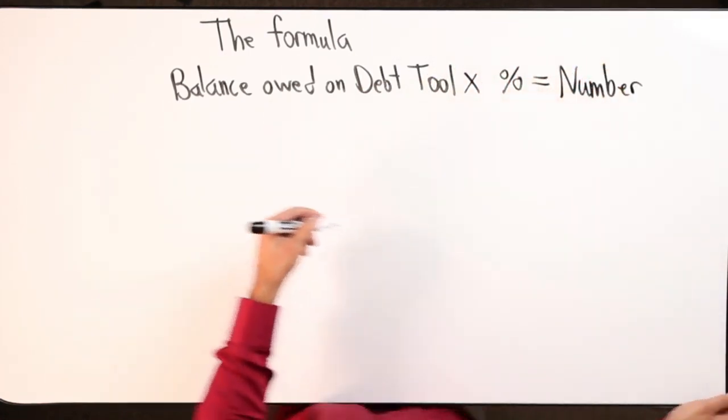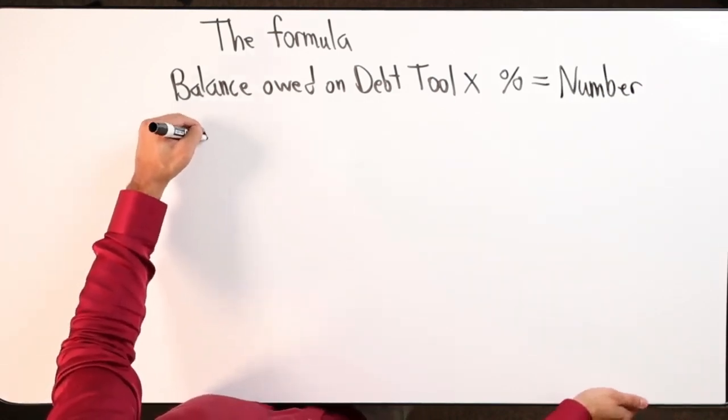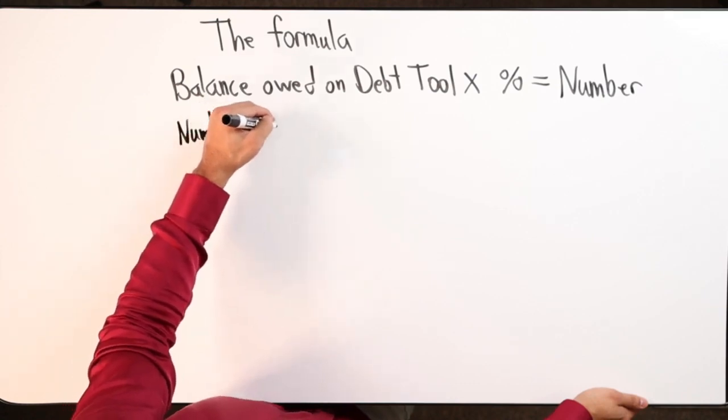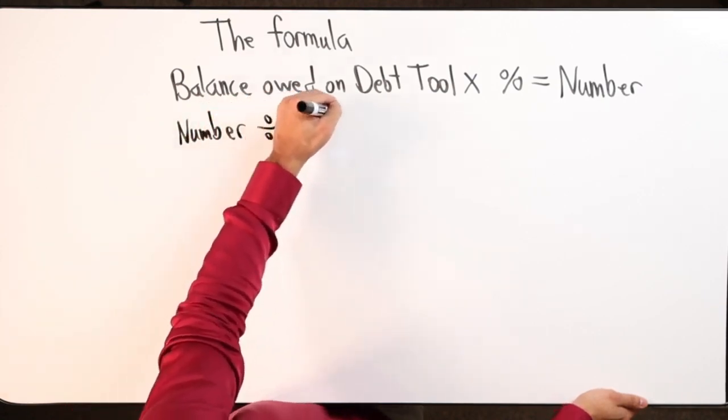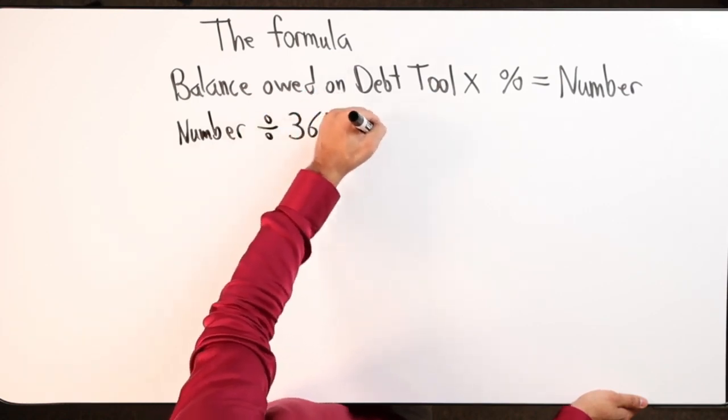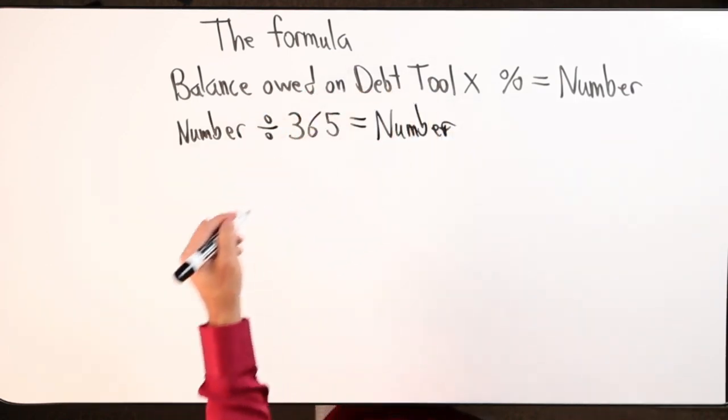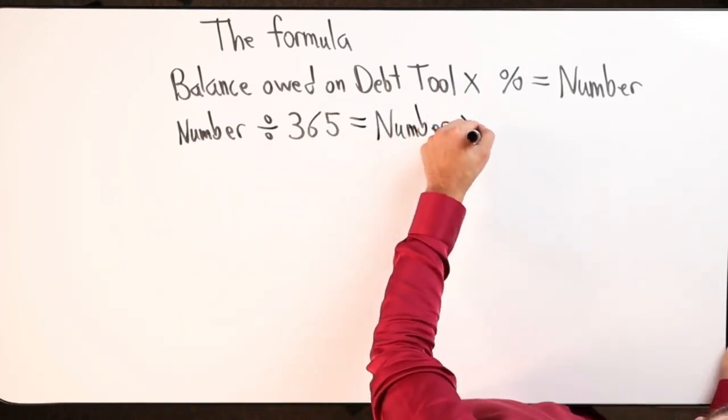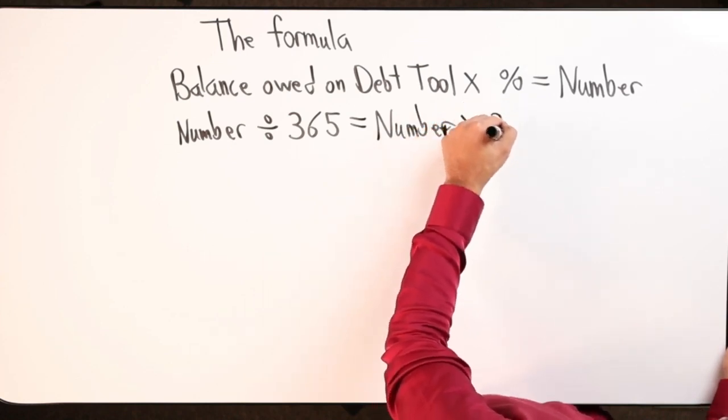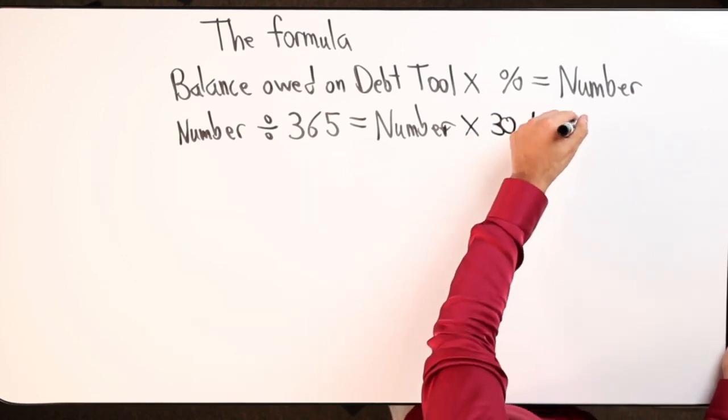You then take that number and divide it by 365, which equals another number. Then you take that number and multiply it by 30 days. That gives you an estimate.